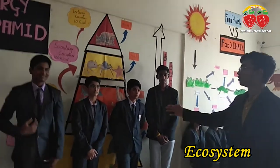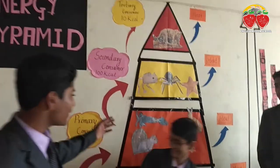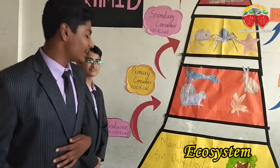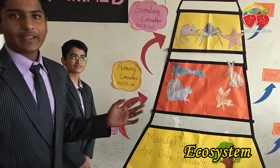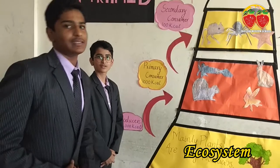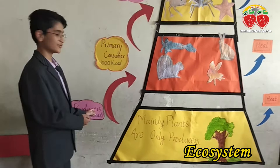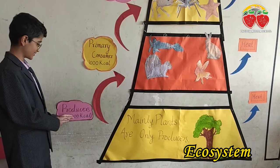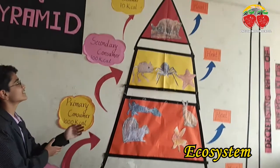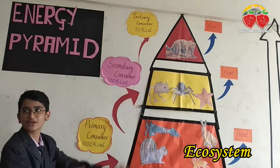Now my friend Prasavish will tell you information about energy pyramids. Energy pyramids consist of four layers in which producers and consumers are there. Everybody has their own energy level, defined in kilocalories. The producers have the most kilocalories, which is 10,000. Then come the primary consumers who have 1,000 kilocalories, then secondary consumers who have 100 kilocalories, and then tertiary consumers who have 10 kilocalories.